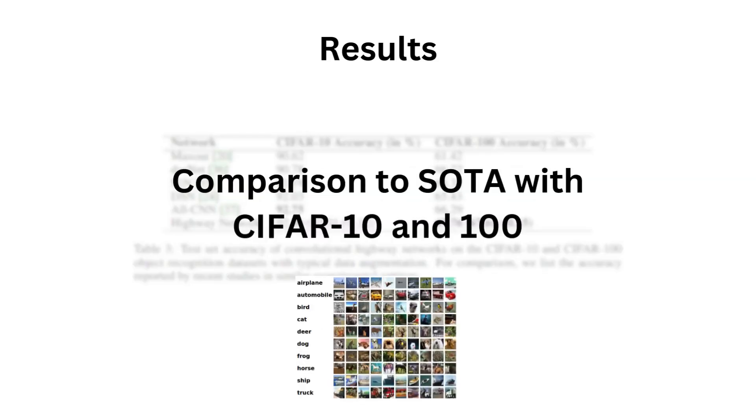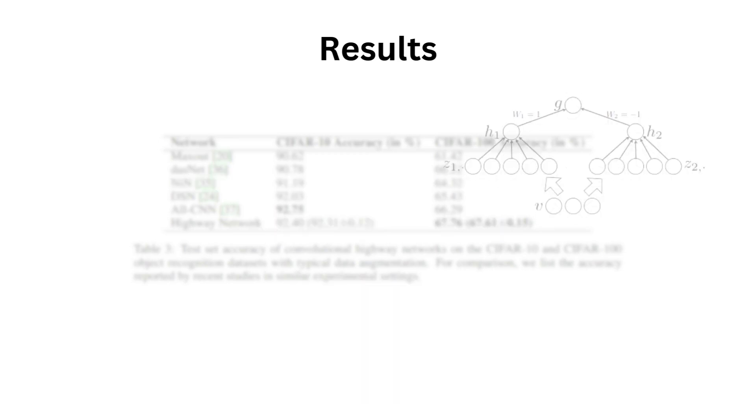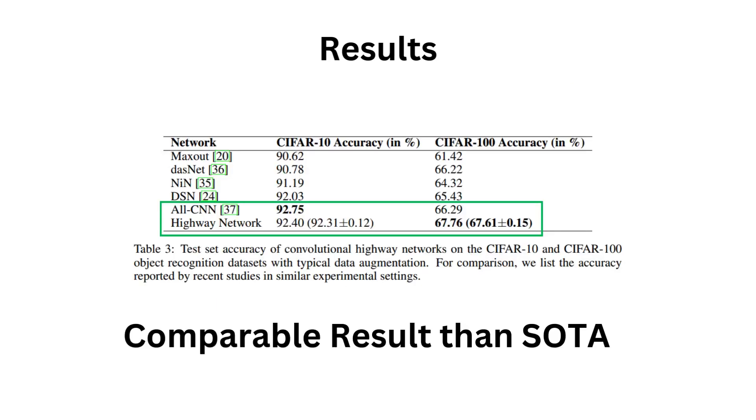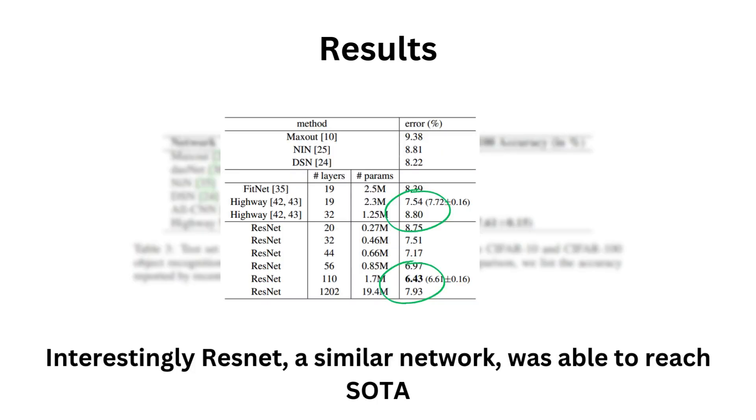The next experiment was to compare the highway networks against the state-of-the-art network on CIFAR 10 and 100. The main networks compared here were Maxout, DSN, and Network-in-Network. The best-trained highway network gave results comparable to the current state-of-the-art and even achieved a new height at CIFAR 100. Interestingly, the ResNet, which has a similar architecture, was able to reach greater results with its 100-layer variant.